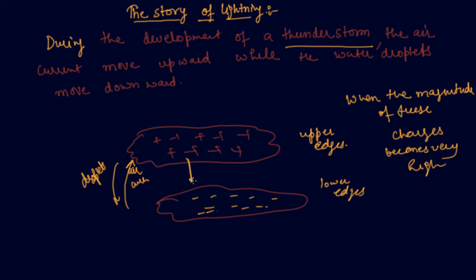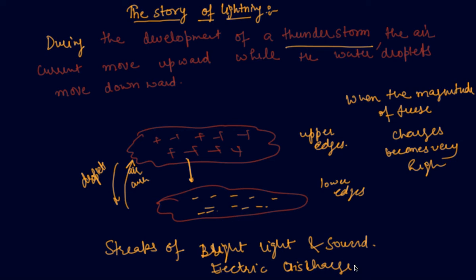charge, these positive and negative charges collide, producing streets of bright light and sound. This process is called electric discharge, and through which the lightning occurs. So this bright light produced is called lightning.